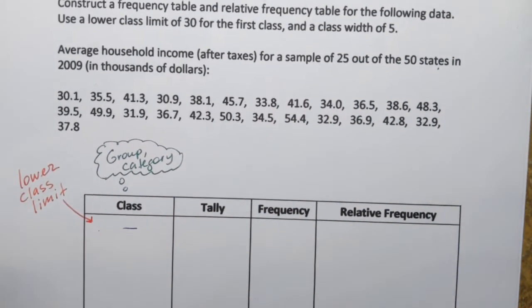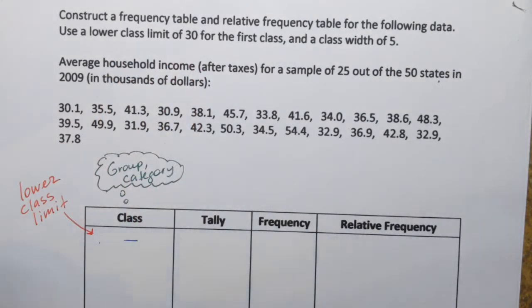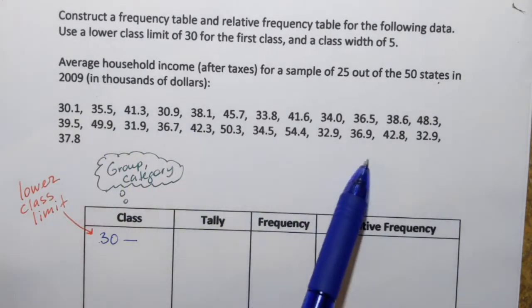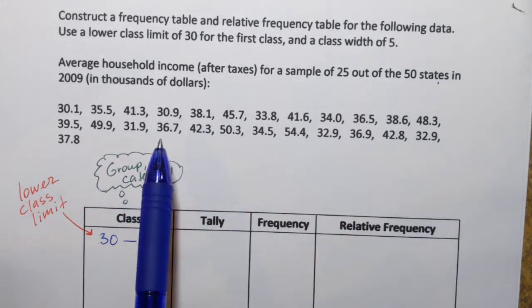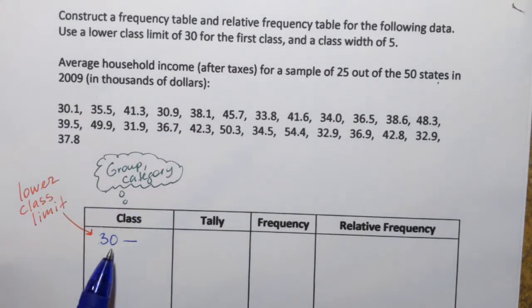For this particular example, I'm actually given the lower class limit to use. It says 30, so I'm going to place it here. But I can also confirm that it's a good idea by looking at the data set and finding the smallest observation. Well, I think that's this one, 30.1. So 30 is slightly below and it's indeed a convenient number to use.